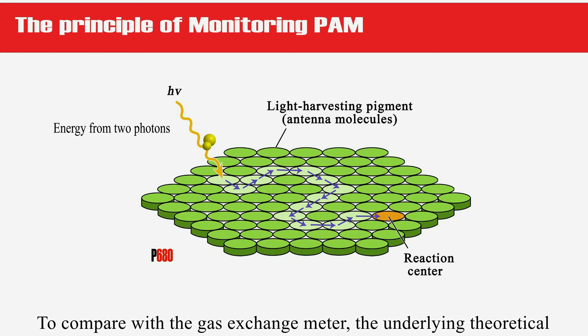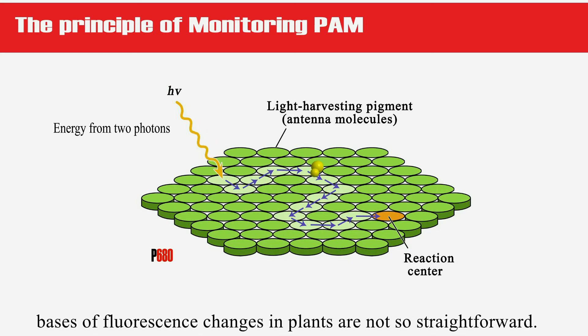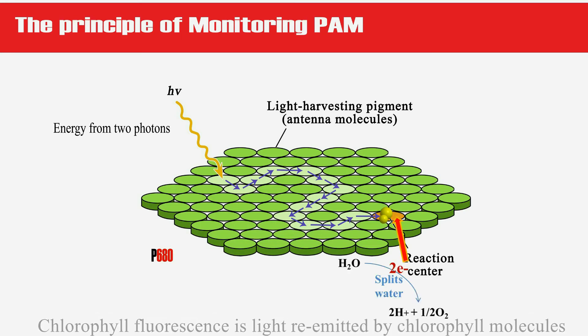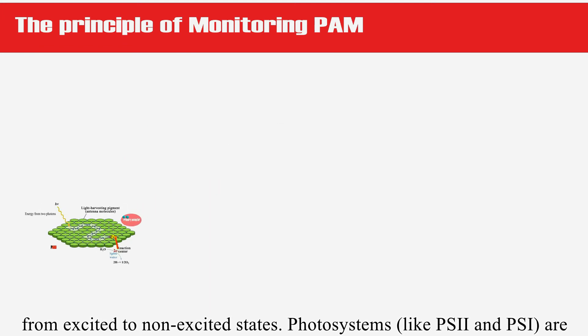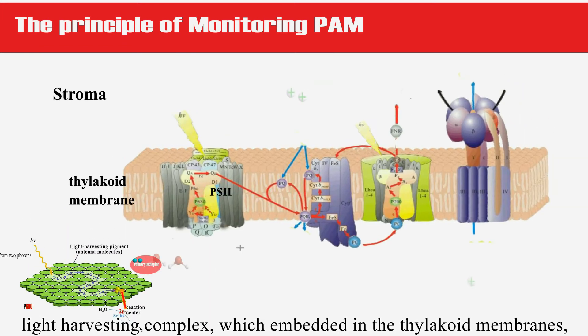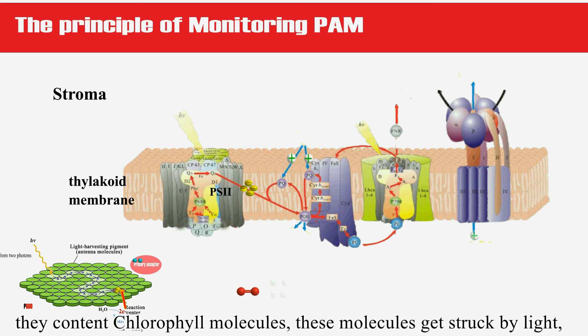As a gas exchange meter, the underlying theoretical basis of fluorescent changes in plants is not so straightforward. Chlorophyll fluorescence is light re-emitted by chlorophyll molecules from excited to non-excited states. Photosystems like PSII and PSI are light harvesting complexes which are embedded in the thylakoid membranes. They contain chlorophyll molecules.